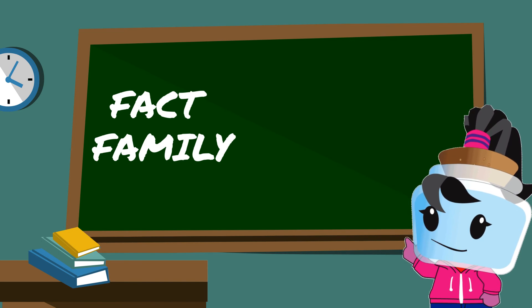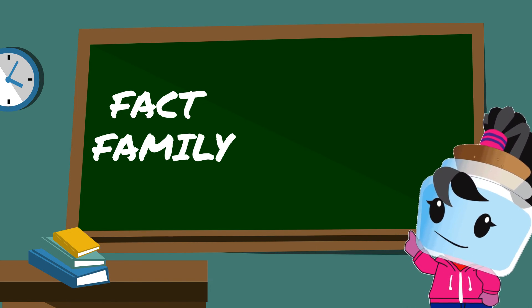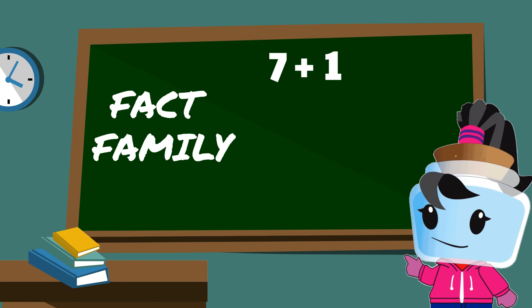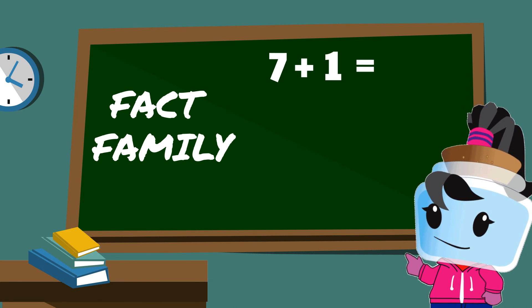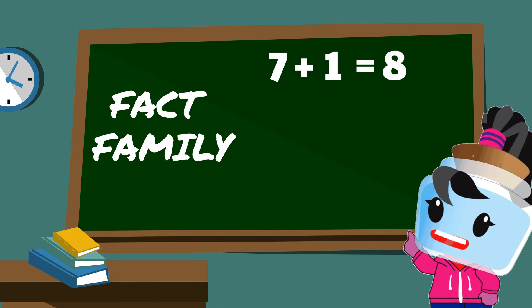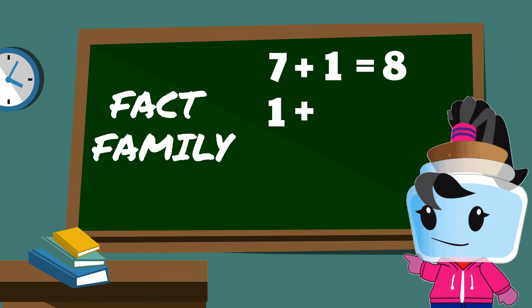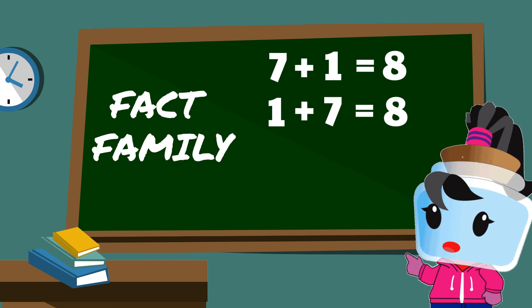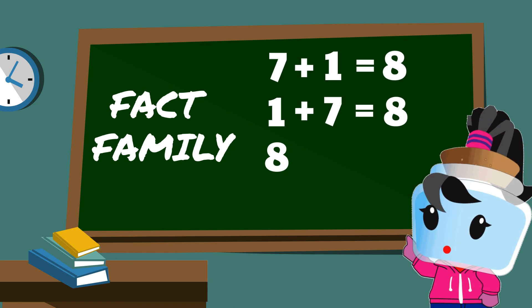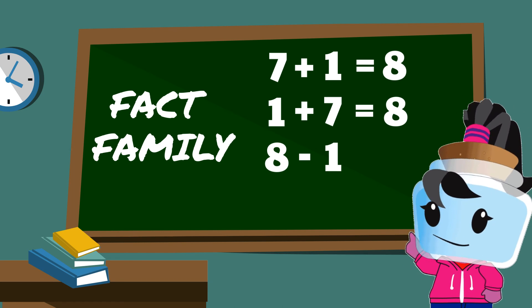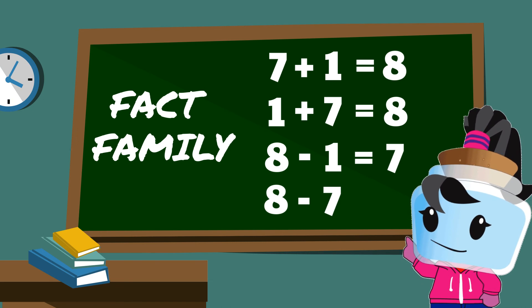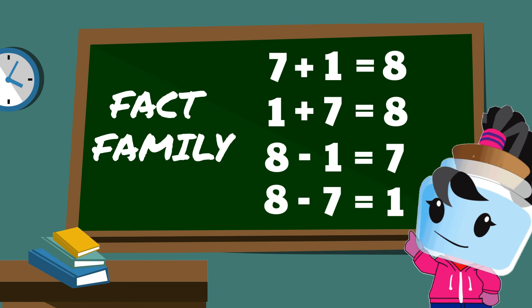Along this story, we have created a fact family: seven plus one equals eight, one plus seven equals eight, eight minus one equals seven, and eight minus seven equals one.